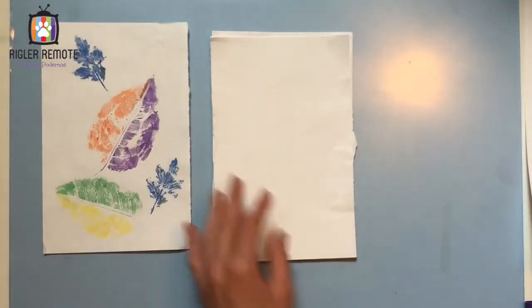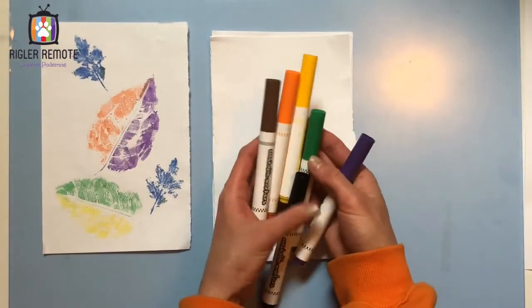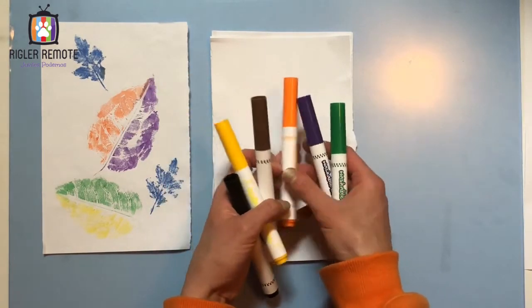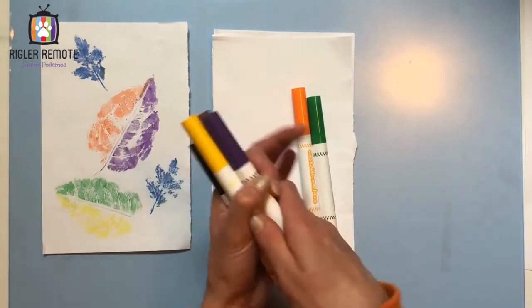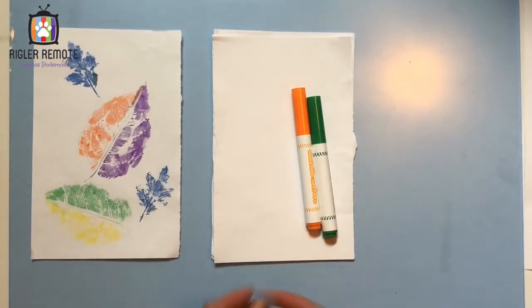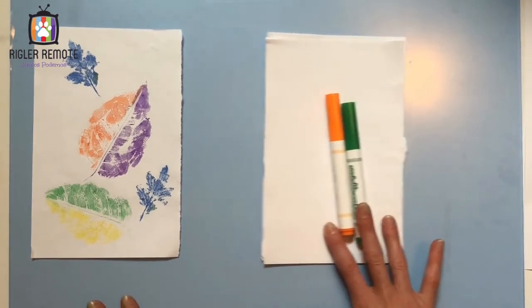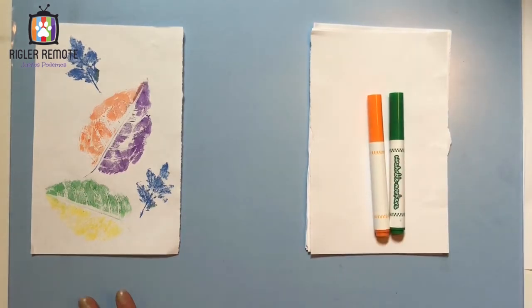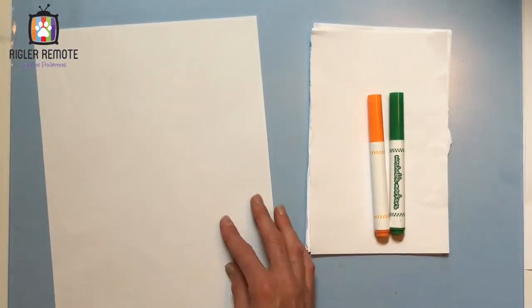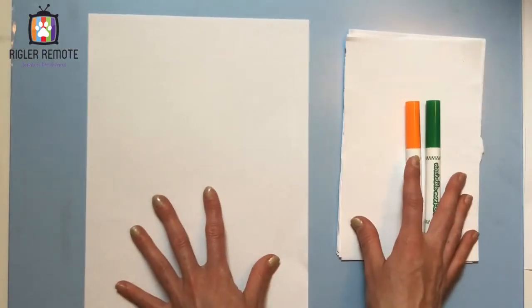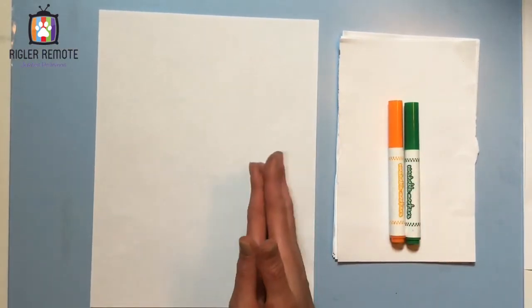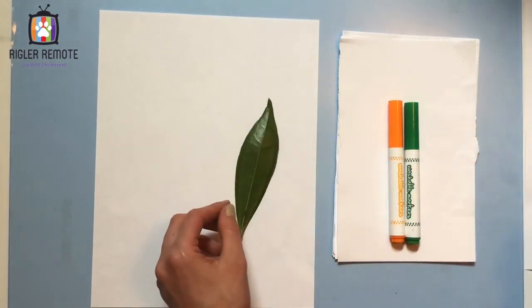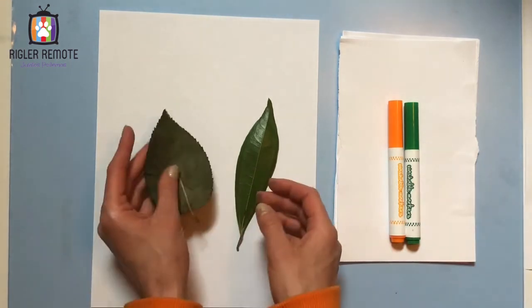Now that I have my paper, I'm going to choose some colored markers. So for this one, I'll do orange and green for the first leaf. And then I also need a scrap piece of paper that I'm going to use the markers to color onto the leaves. So here's a scrap piece of paper that I'm going to use. And now I get to pick my leaves. I'm going to pick this one to use. I'm going to also choose this leaf.